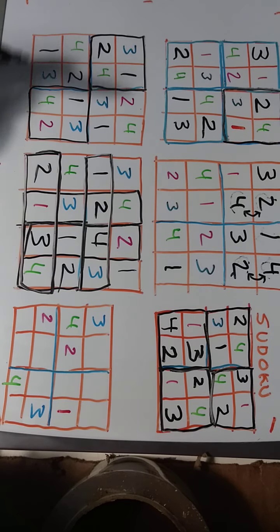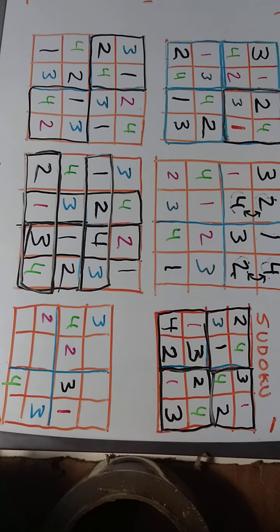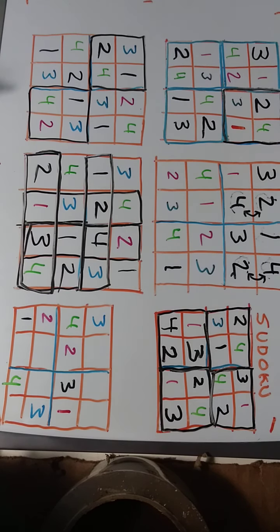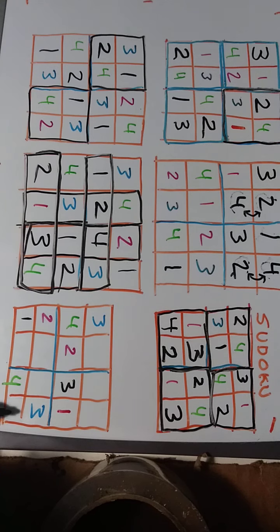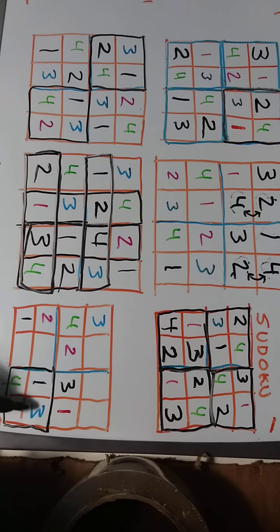Down to our last puzzle. In this row we're missing a three. In this column we're missing a one. We need a two and a one here, but this column already has a one so we can't put the one there, and this row also has a one so we can't put the one there either. We have to put the one there, and that leaves us with the bottom right box needing a two.